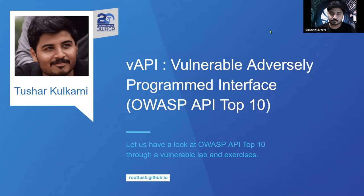APIs act as business logic and a catalyst for the implementation of features in an application. However, a poorly configured interface may drag down the entire security posture of the organization, and this often leads to data breaches. In 2021 we can say we are comfortable enough to consider APIs as a separate entity in security processes like vulnerability assessment or defensive ops. VAPI is a small attempt at spreading awareness about API security.